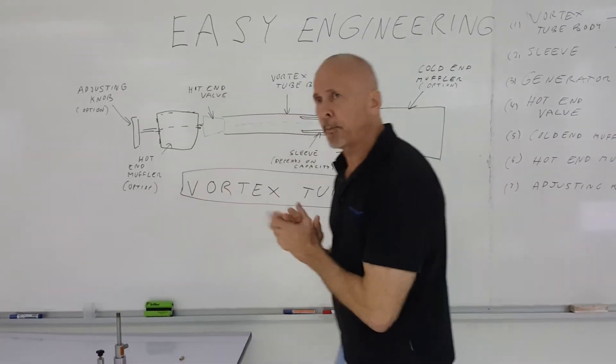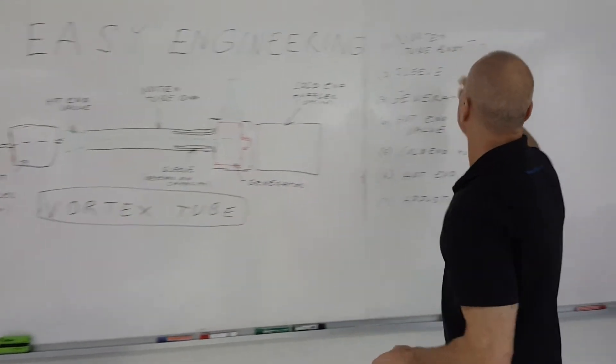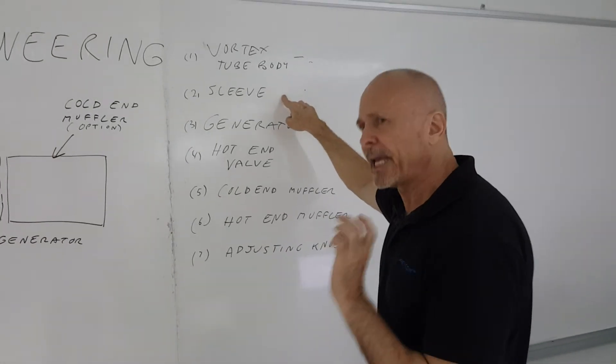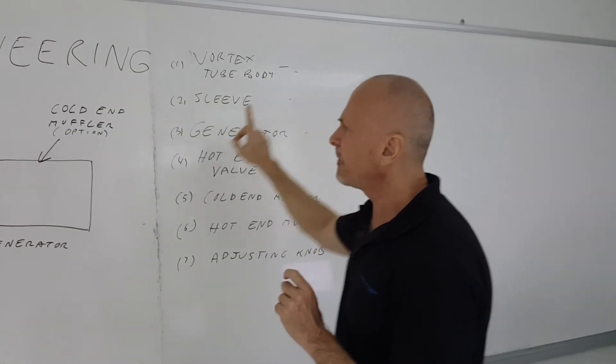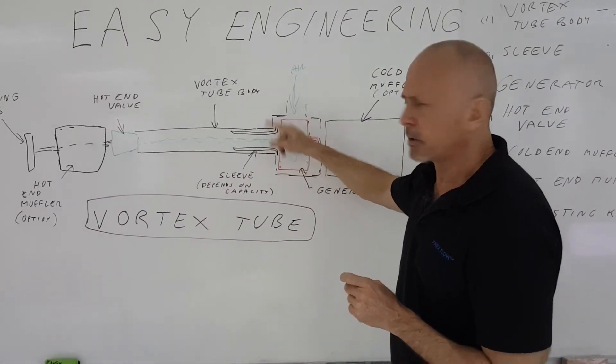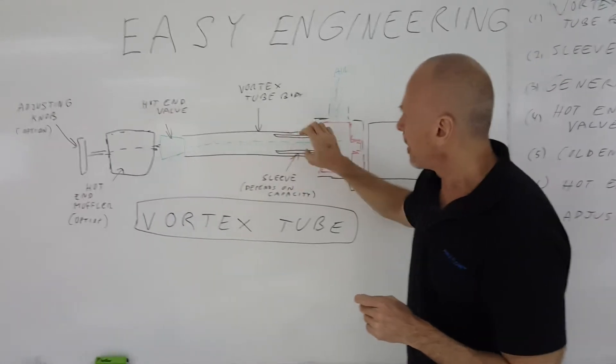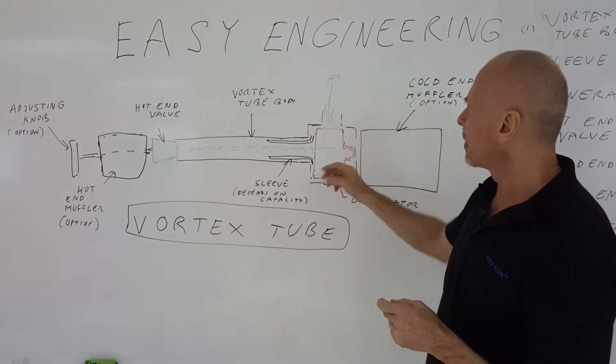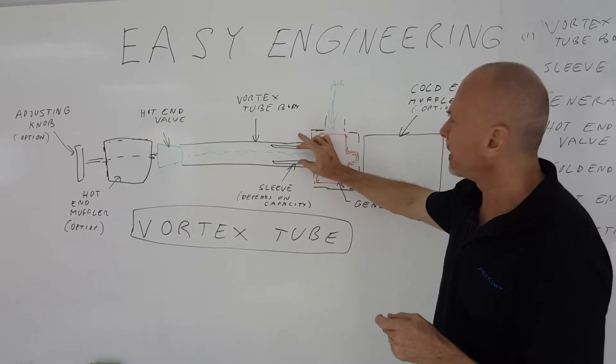So basically the parts of a Vortex 2 are: Vortex 2 body. You also have a sleeve occasionally put inside the Vortex 2 body. The sleeve kind of controls the inside diameter a little bit of that hot area, of that hot end tube where the air is spinning. If the capacity is very low, you want to have that more narrow on the inside.